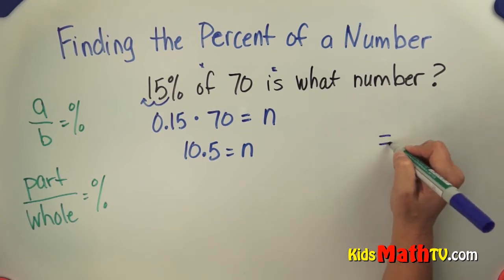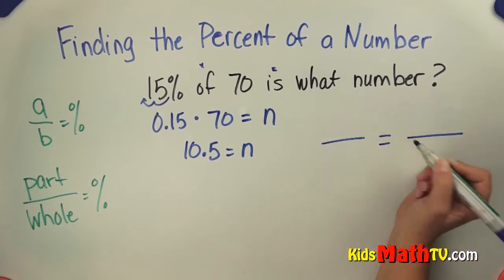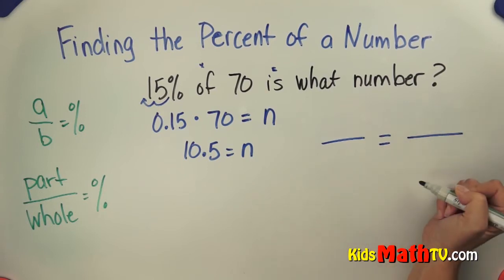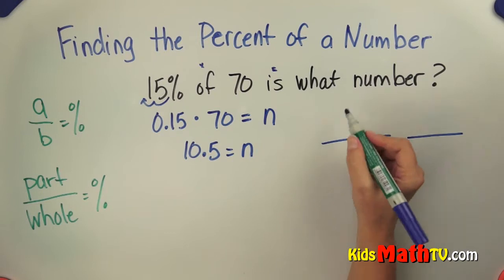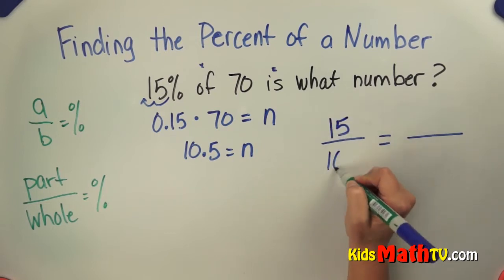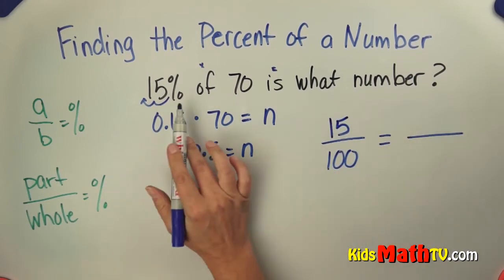If we do part over whole, part over whole. 15% is an easy ratio. It's 15 per 100. It's the part over the whole, 15%.